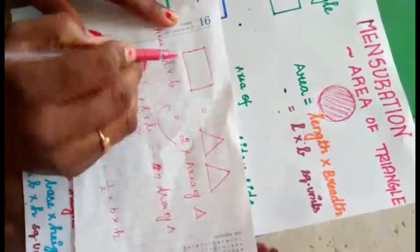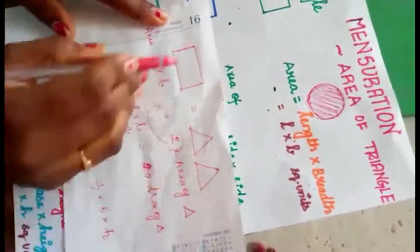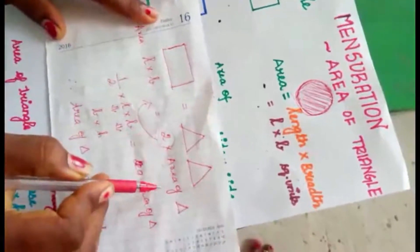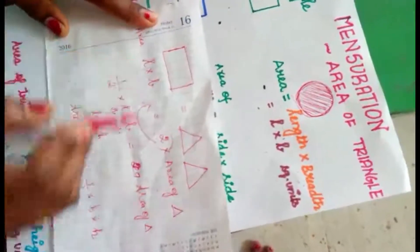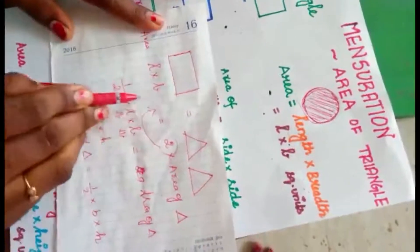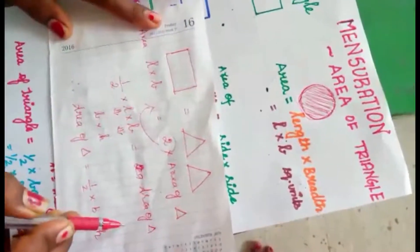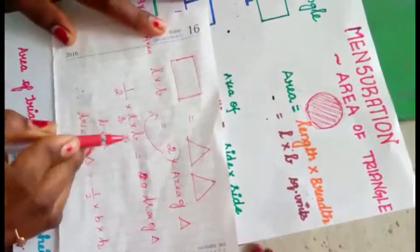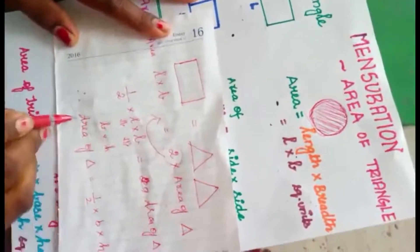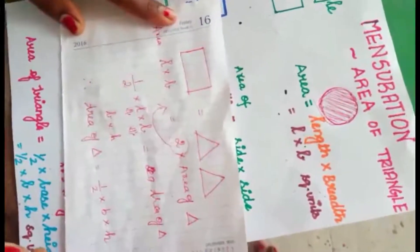Again, we have taken a rectangular paper which is equal to two triangles. Area of rectangle is equal to length into breadth, which is equal to two times the area of triangle. One-half into length into breadth is equal to area of triangle, where length is the base and breadth is the height. Area of triangle is equal to half into base into height. Try this activity at your home.